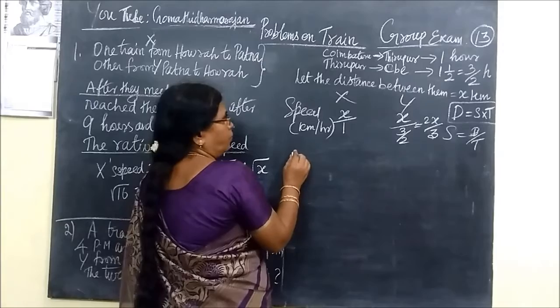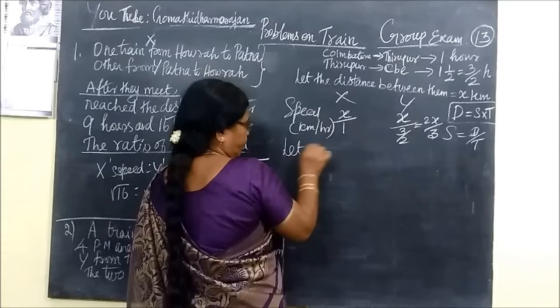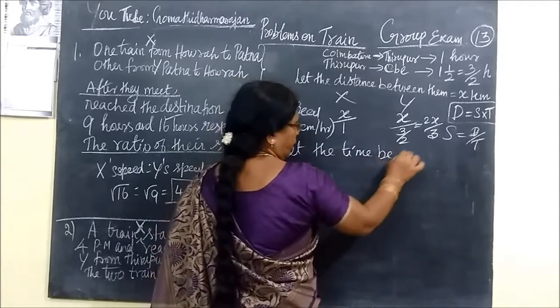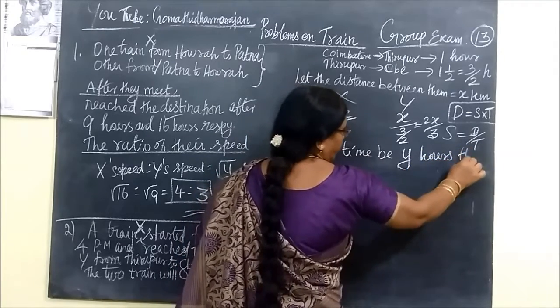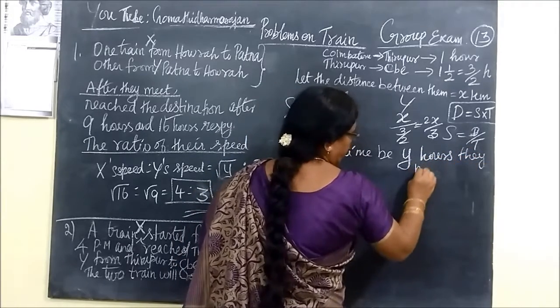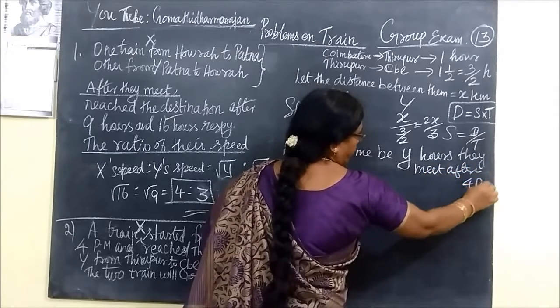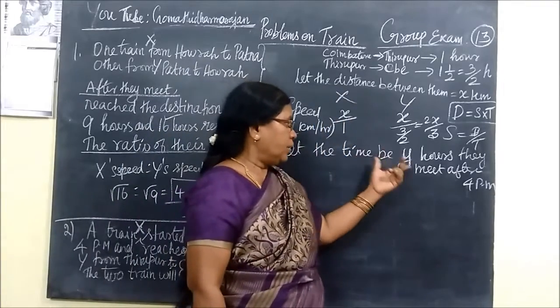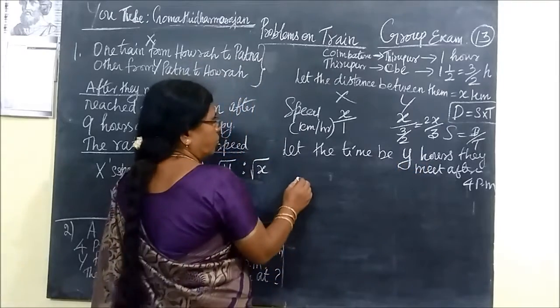And you have to find at what time they cross each other. So next time. The Y hours. They meet after 4 pm. So 4 pm time. The time is X train time. The time is X train time. So we know.